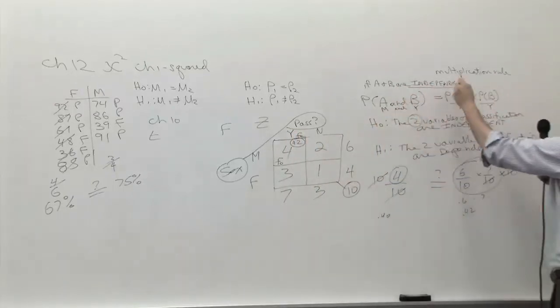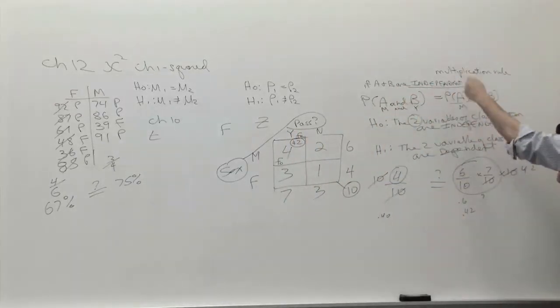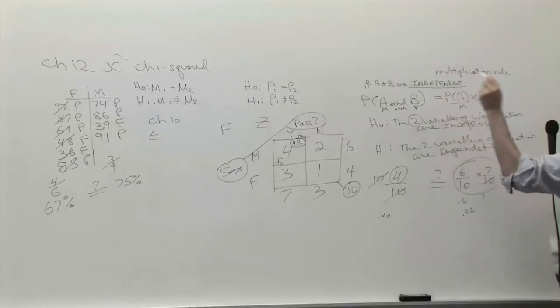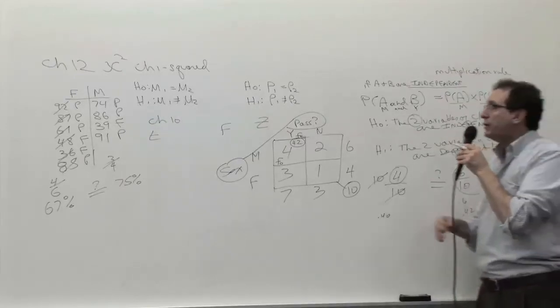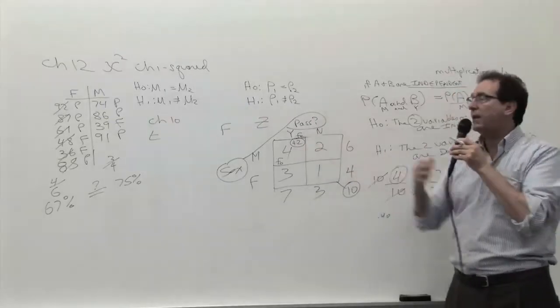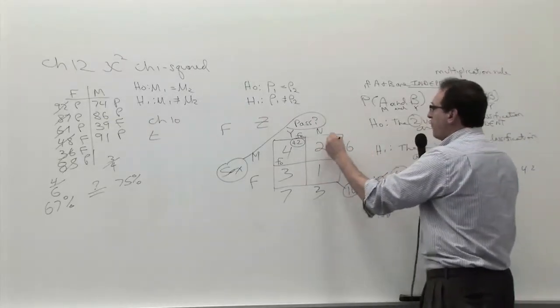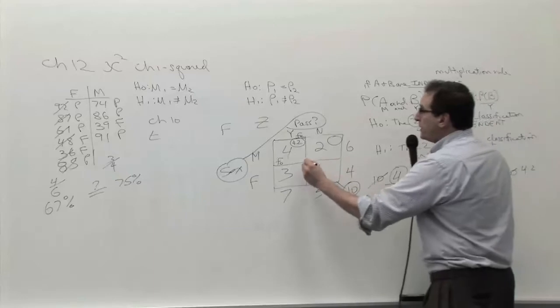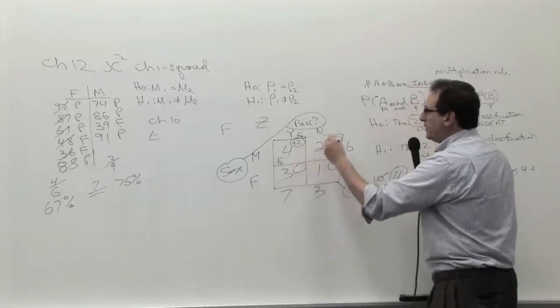Because under the assumption of independence and under the formula that's related to that formula, we would expect 4.2 people in that particular box. How many do we actually see? Four. Pretty close, but we're going to have to do the same calculation for all the cells of the table. These are called the cells of the table.